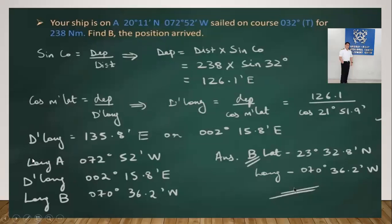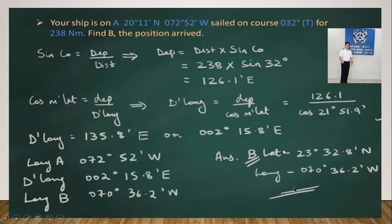Applying longitude A with the D.Long: longitude A is 072°52' West. You have traveled easterly by 2°, so your longitude decreases — subtract — giving longitude B of 070°36.2' West. Therefore, the coordinates of arrival are: latitude 23°32.8' North, longitude 070°36.2' West.